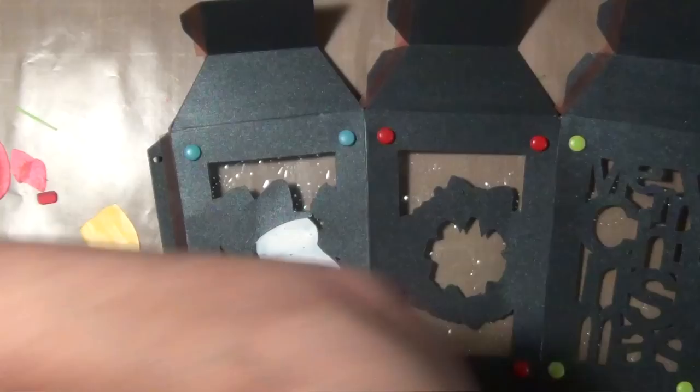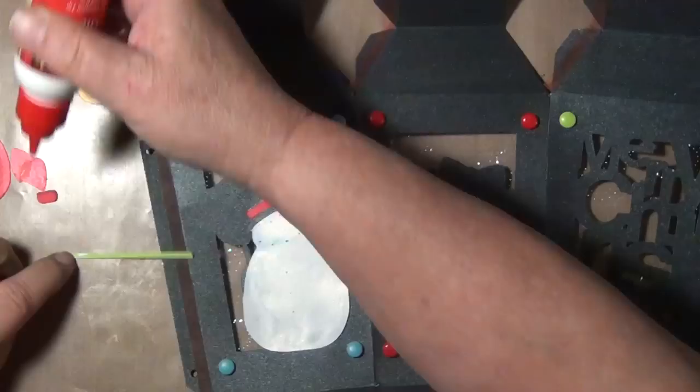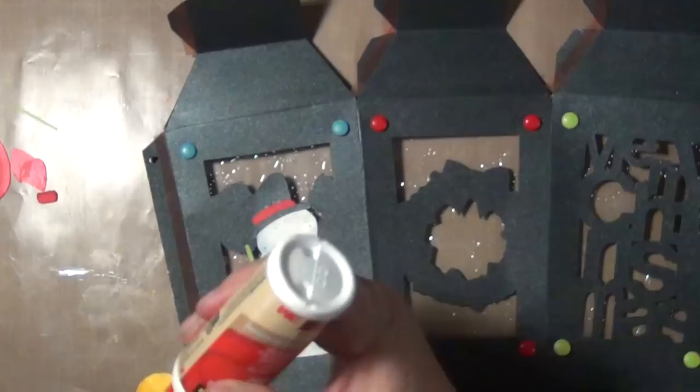Now adding the snowman to the lantern. I like to use that scotch dry glue because it's a little bit forgiving and I tend to put things sometimes in the wrong spot and anyway I have to move it around.